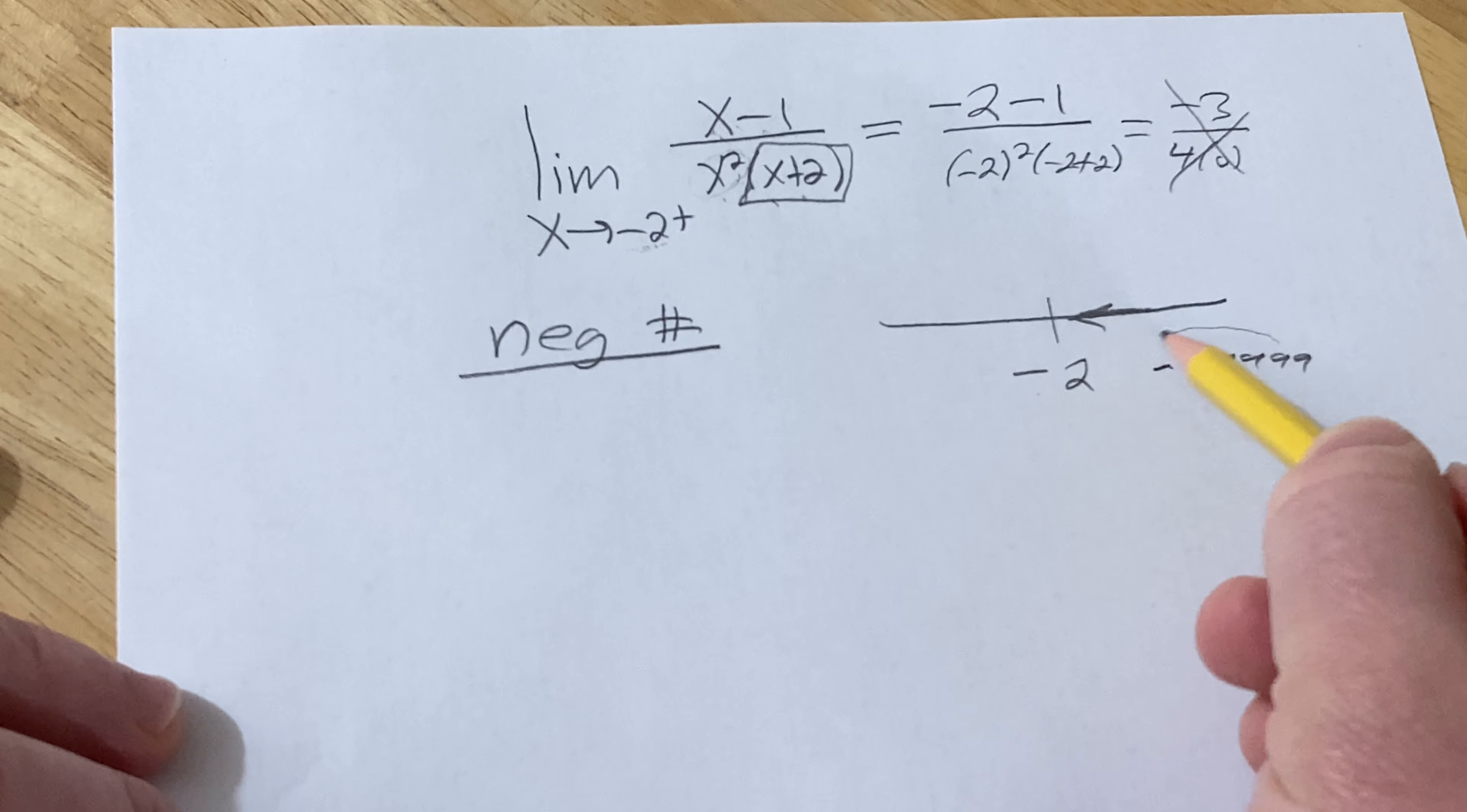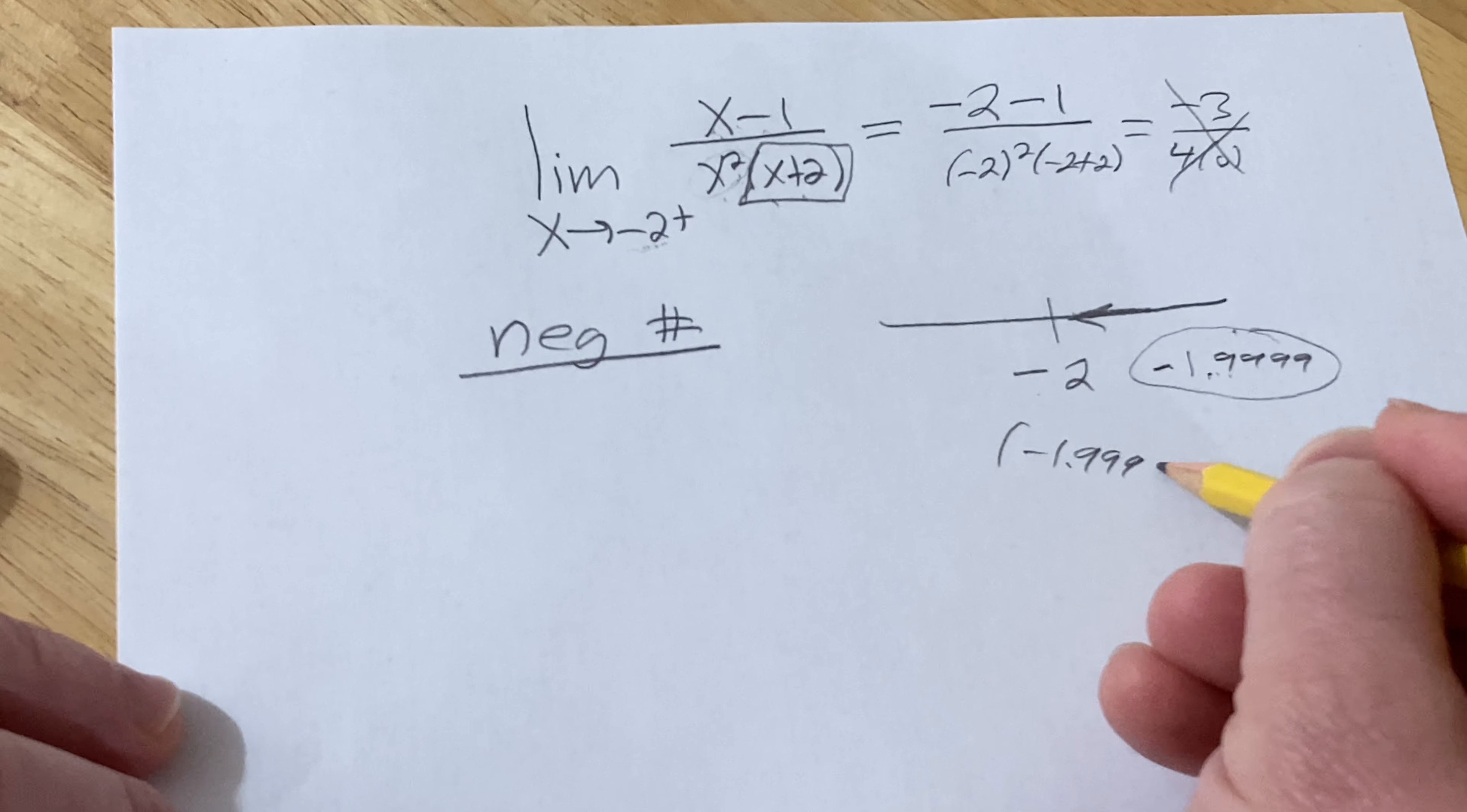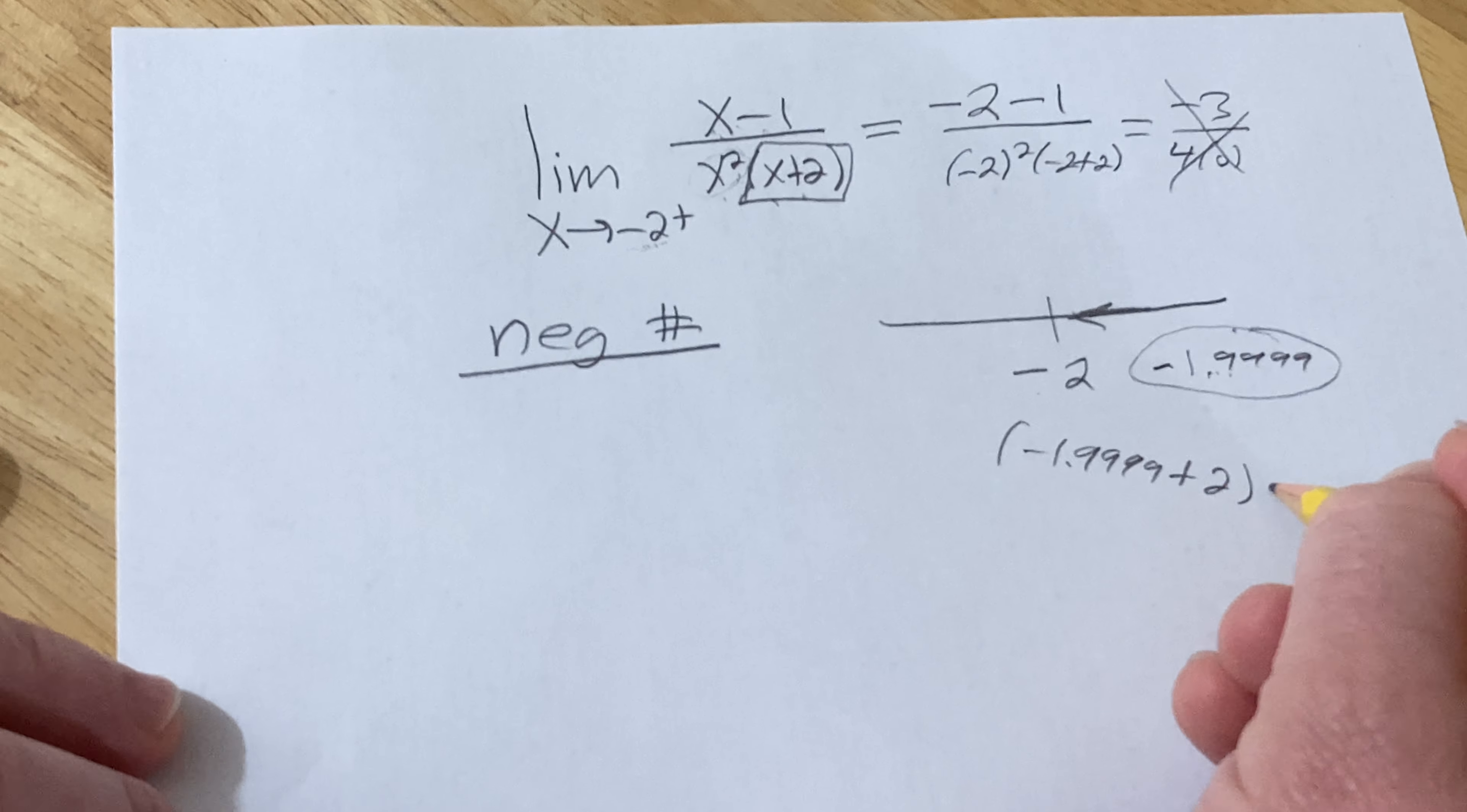But if you were to take something that's infinitely close to negative 2 and bigger than negative 2 and add it to 2, you would get a positive number. It would be positive. So basically you're going to get a very small positive number.